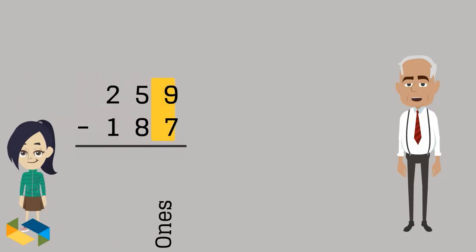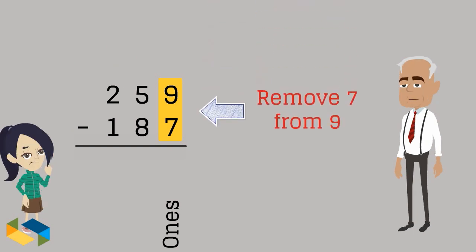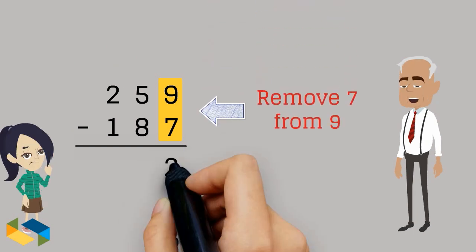As usual, we start at the ones place. Here, we have to remove 7 from 9, which leaves us with 2.